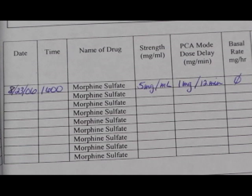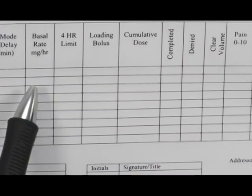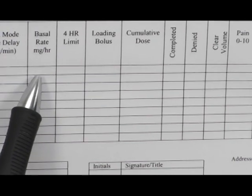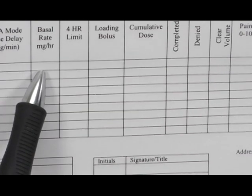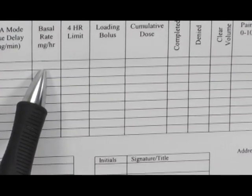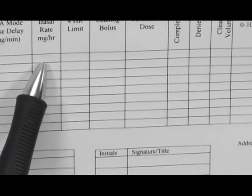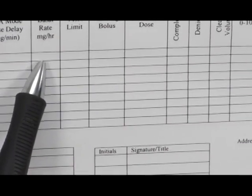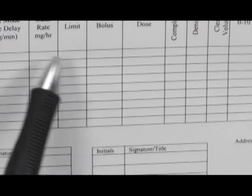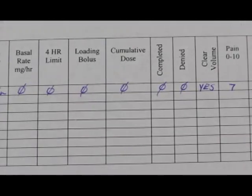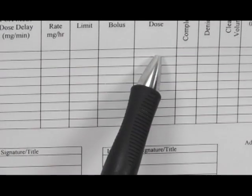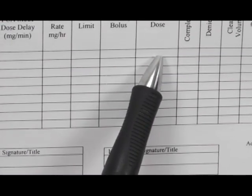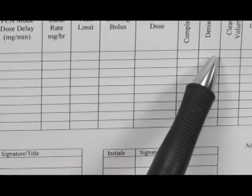Moving this form over so you can see the next portion of it. The next listing is for the basal rate, which is the continuous rate. The physician didn't order any for this particular patient, so we would just write zero. When we write zero on your PCA form, always draw a diagonal line through it. There's no four-hour limit ordered, nor loading bolus. If there was a loading bolus, we would write that amount in this column. The cumulative dose will be zero because we're just starting the pump, as will the completed and the denies.